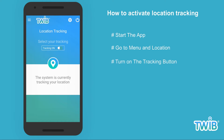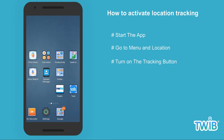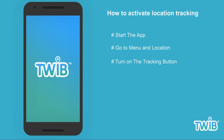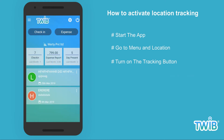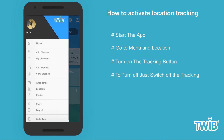Turn it on to start tracking your location. Once turned on, you can exit the app and it will still track your location in the background. To turn it off, just go to the same menu and turn it off.